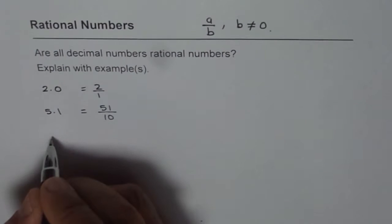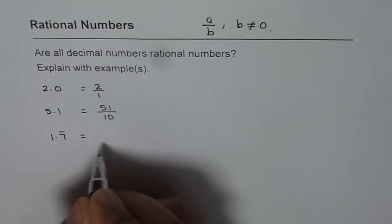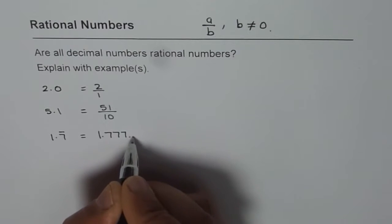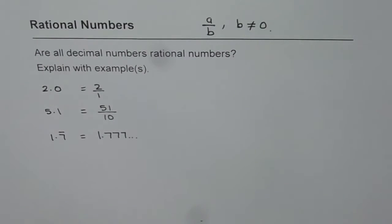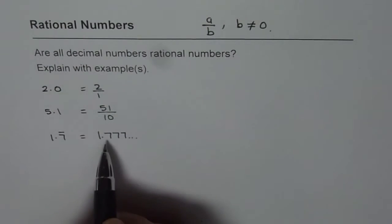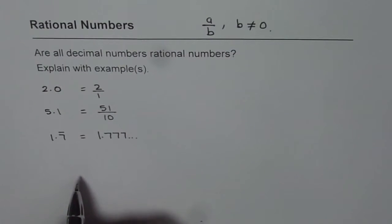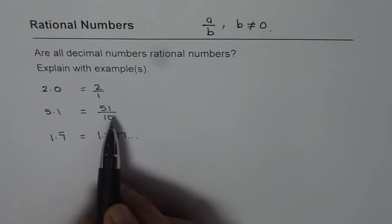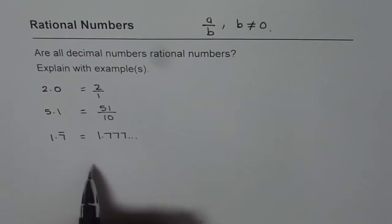How about a number like 1.7 recurring? That is to say, how about a number 1.777 like that, where a decimal repeats? As you will see in a few examples, we can write this number also as a over b. Let me show you here.